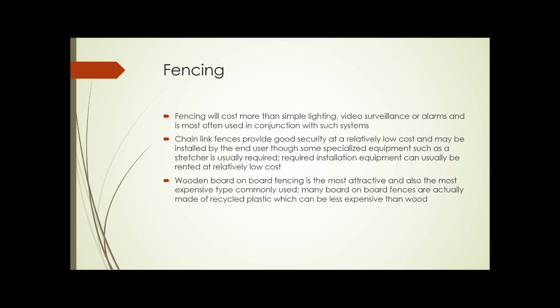Next is fencing, which is probably the most expensive solution we've talked about. If your site doesn't already have fencing, it's going to cost more than lighting, video surveillance, or alarms — but it's often used in conjunction with such systems. Alarm beam and detector systems are often mounted on fence posts or just inside the fences, and lighting can be set up to illuminate the fence area. Chain link fencing provides good security at a relatively low cost and can be installed by the end user, though some specialized equipment such as a chain link fence stretcher is usually required — that equipment can usually be rented, and it's very inexpensive to rent.